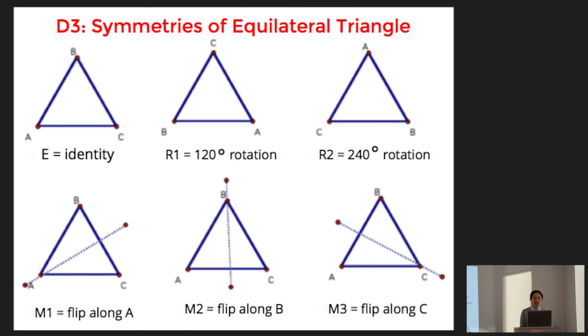And then another important group in group theory is called D3. And this is the group of symmetries of the equilateral triangle. An equilateral triangle is a triangle with three equal sides. And what a symmetry does is it moves a triangle in such a way that it preserves its orientation and you can't tell that it's moved at all. For example, e is obviously identity. It does nothing to the triangle.